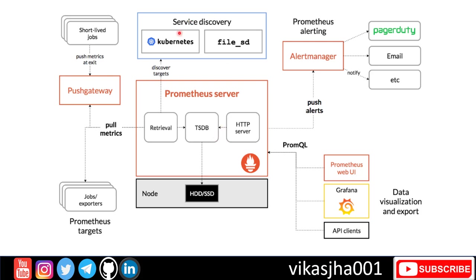What is service discovery? When you install agents on target systems, there are two mechanisms to tell Prometheus server about them. One is static configuration — you go to the Prometheus server configuration file and provide hostnames of all servers where agents are installed. The other is service discovery, where Prometheus connects to the target systems and discovers them on its own.